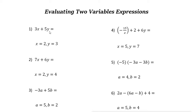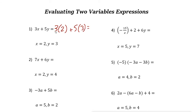The first expression is 3x plus 5y, where x equals 2 and y equals 3. To evaluate, substitute x with 2 and y with 3: 3 times 2 plus 5 times 3, which gives us 6 plus 15, and the answer is 21.